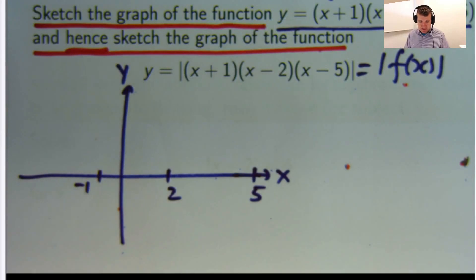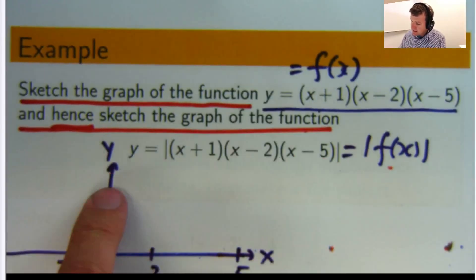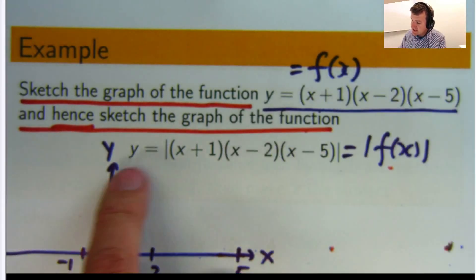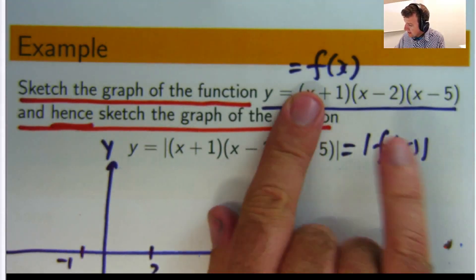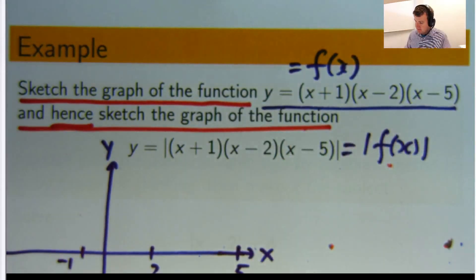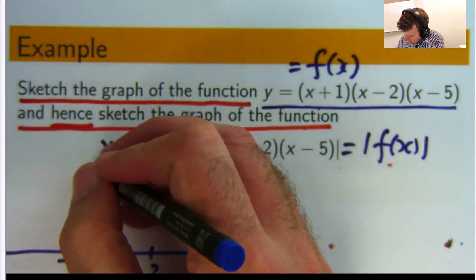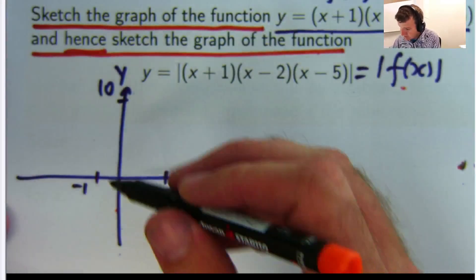Alright? So let's actually, oh, one other thing. What is the y intercept? Well, the place where the curve cuts the y axis is when x equals 0. So it's 1 times negative 2 times negative 5. So that's positive 10. So I won't do this to scale, but there'll be a positive 10 up here. Okay? So let's sort of join all these points together. See what we can do.